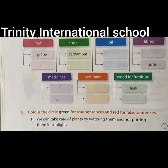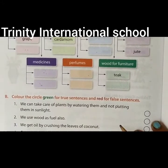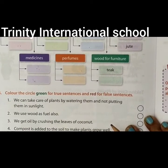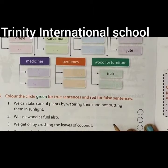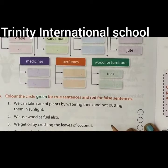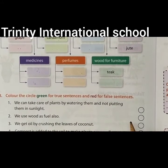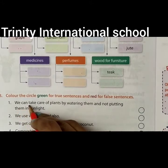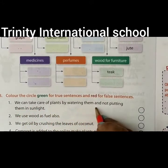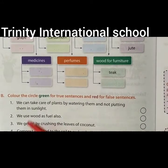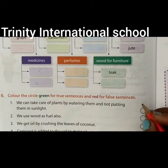Now let us move to the second question. Color the circle green for true statements and red for false statements. Take a green crayon and a red crayon. First statement: we can take care of plants by watering them and not putting them in sunlight. This is a false statement — we need to water plants as well as give them sunlight. So color it red.